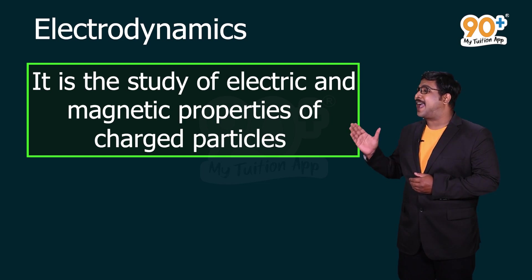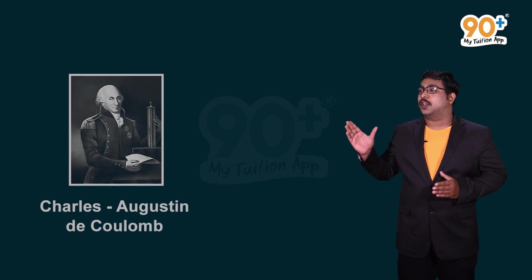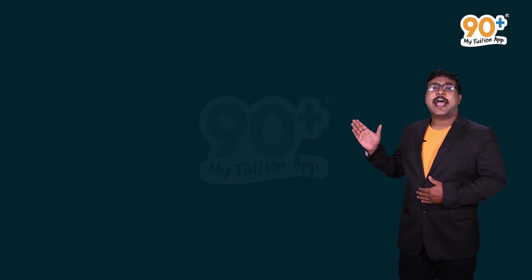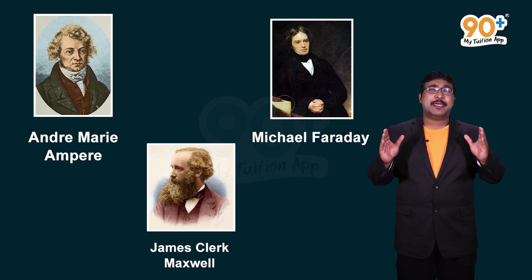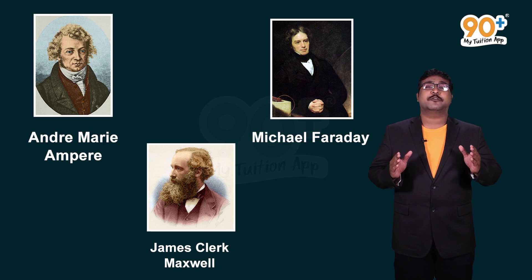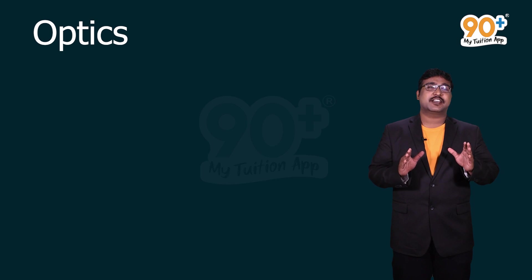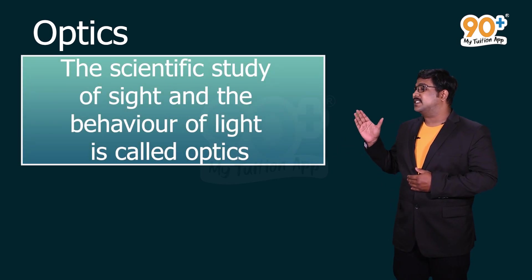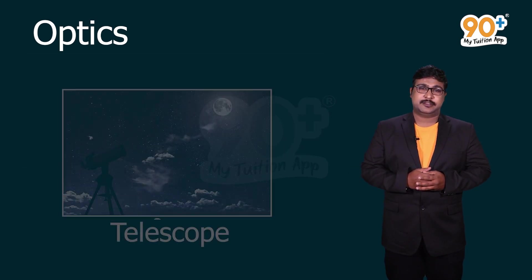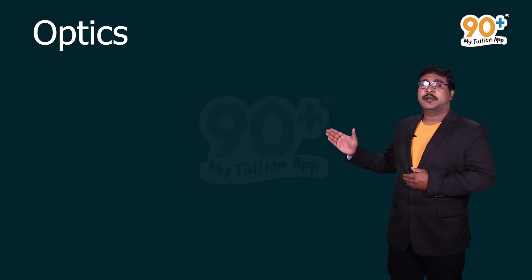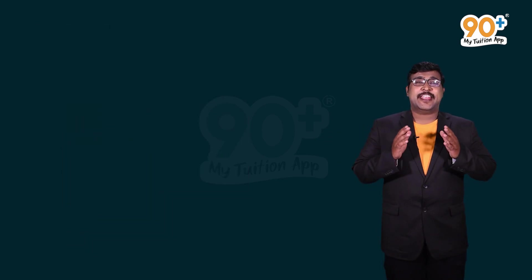Electrodynamics is the study of the electrical and magnetic properties of charged particles. Scientists such as Coulomb, Oersted, Ampere, Faraday, and Maxwell have contributed immensely to the growth of electrodynamics. Optics is the scientific study of sight and the behavior of light — telescopes, microscopes, and the light spectrum all use optics.